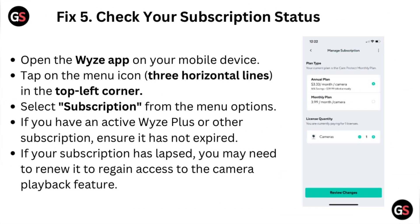Fix five: check your subscription status. Open the Wyze app on your mobile device and tap on the menu icon in the top left corner. Select Subscription from the menu options. If you have an active Wyze Plus or other subscription, ensure it has not expired. If your subscription has lapsed, you may need to renew it to regain access to the camera playback feature.